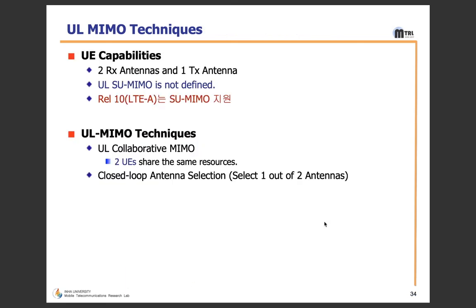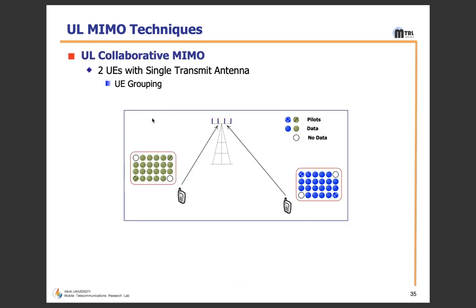We have now studied DL MIMO techniques and will study UL MIMO techniques. UL Collaborative MIMO: two user equipments share the same resources with single transmit antennas. In the resource grid, the blue pilots correspond to the first user and the green pilots correspond to the second user — the first and last diagonals of the first user's resources serve as pilots for UE1 and have not been used by the second user.